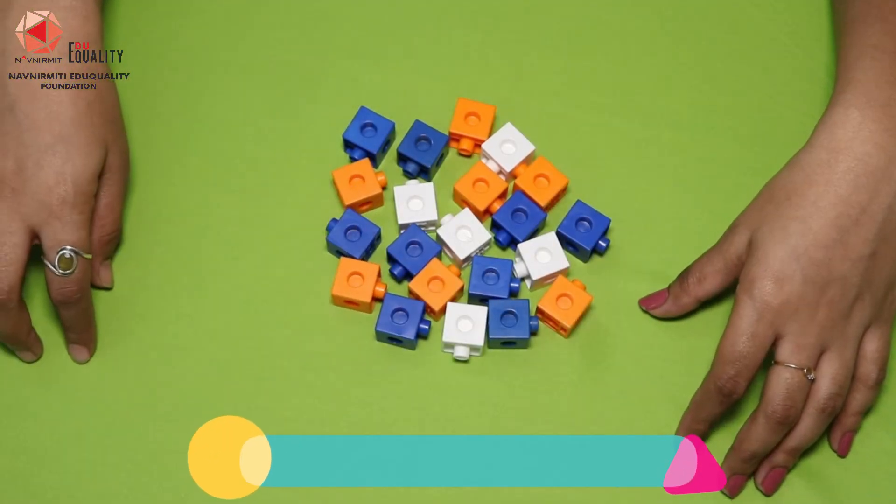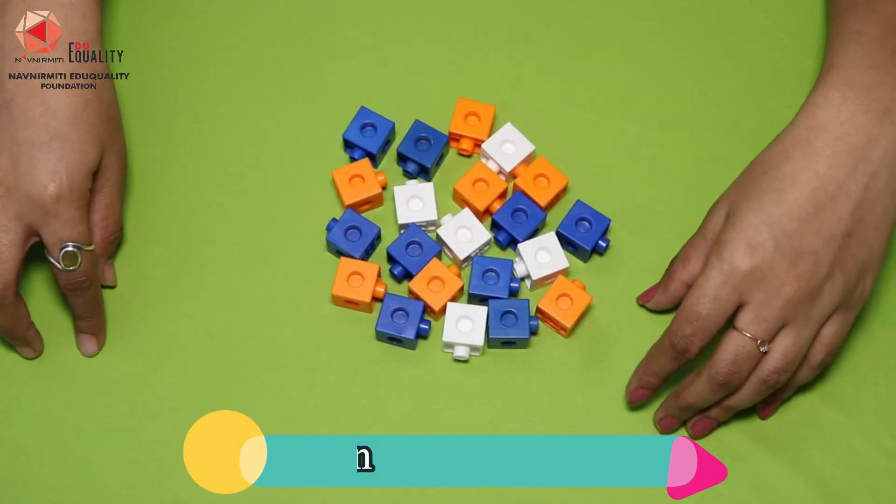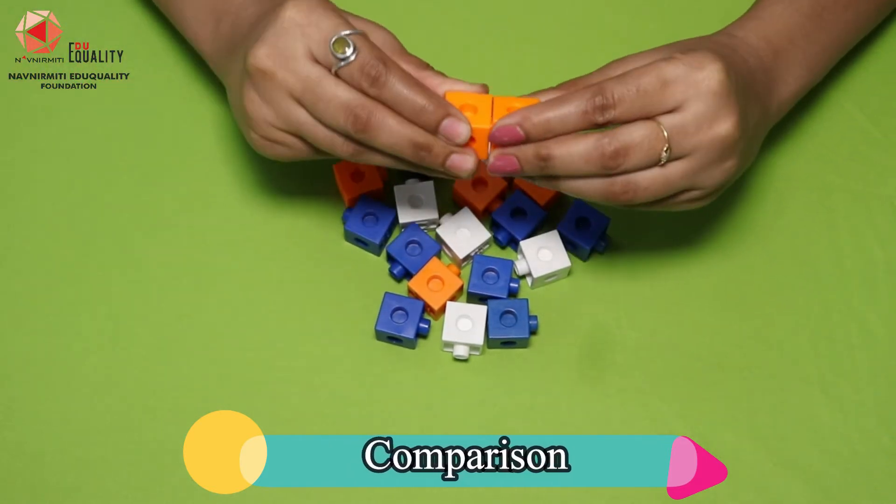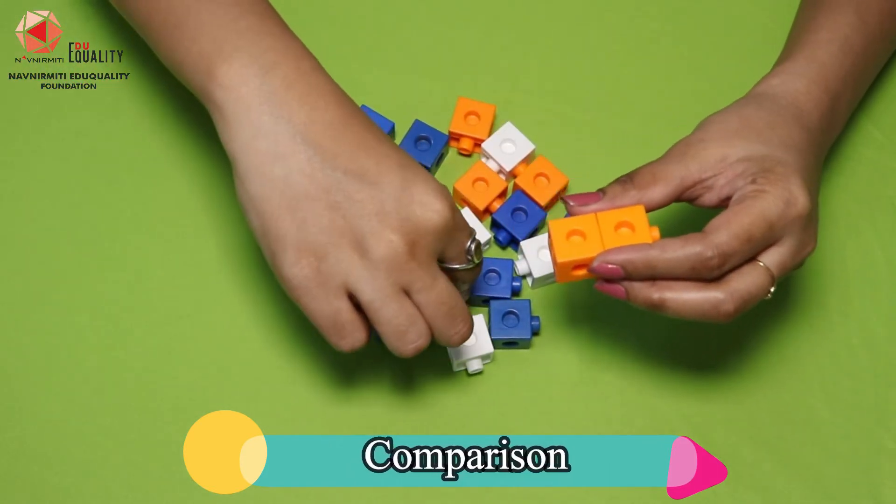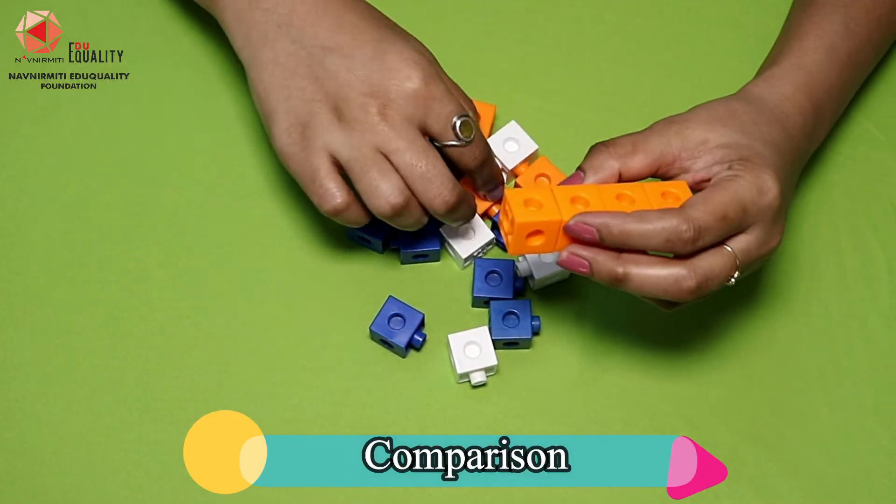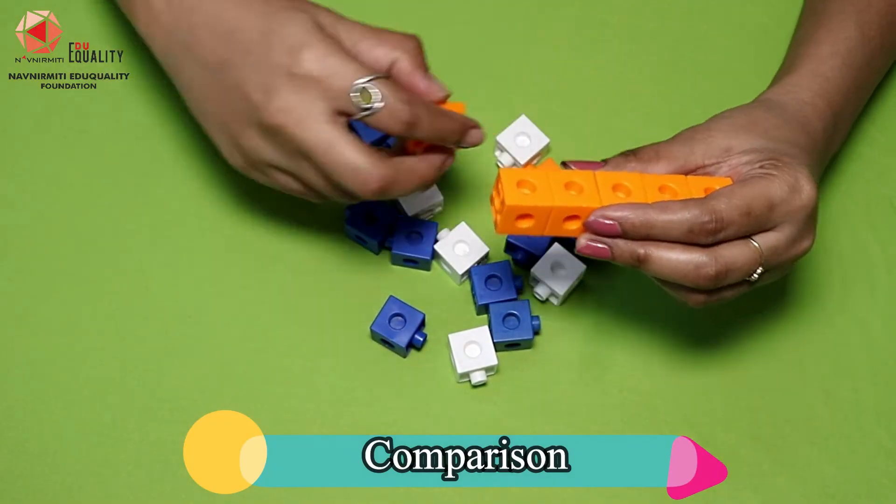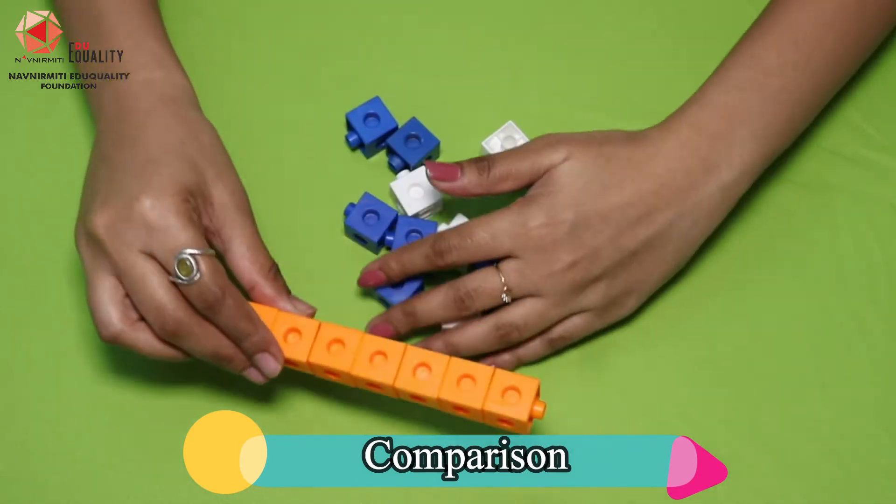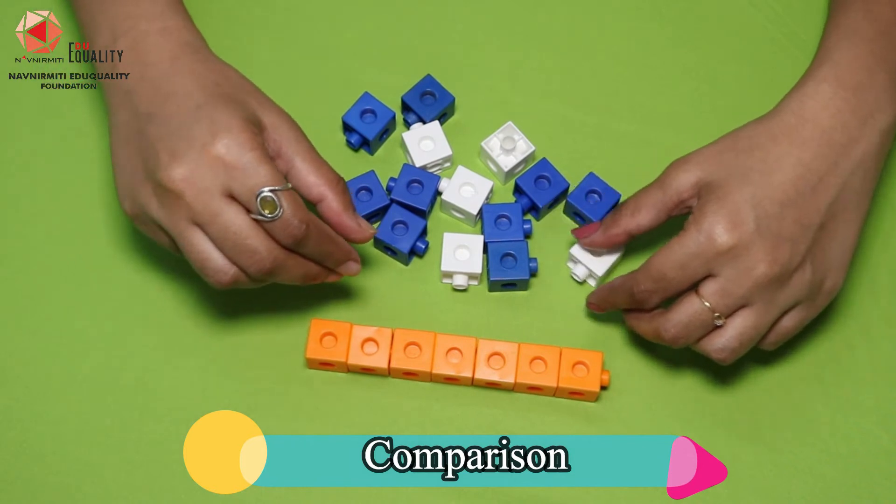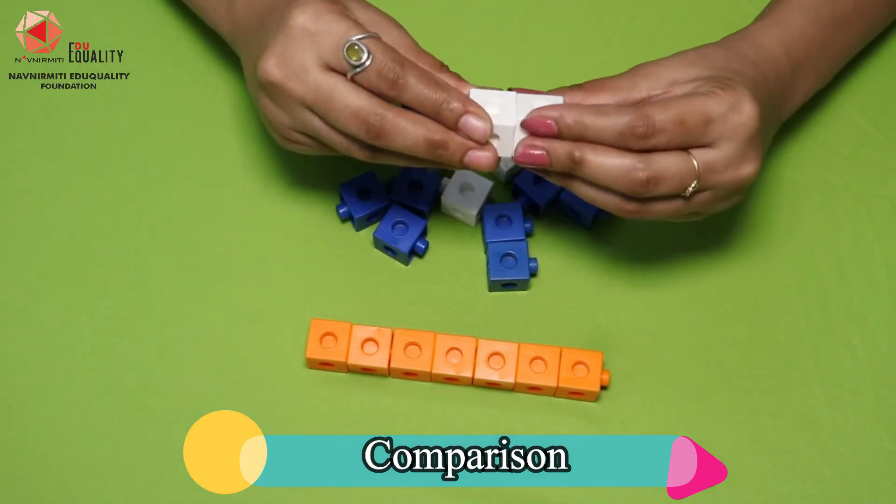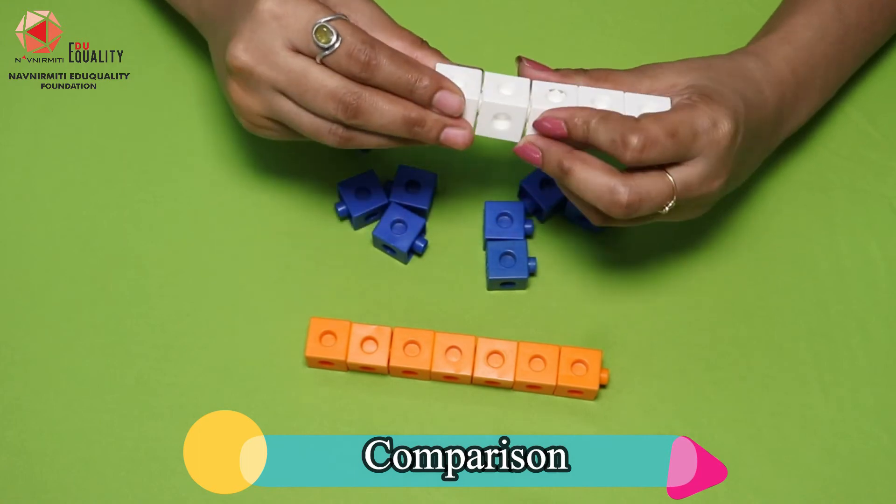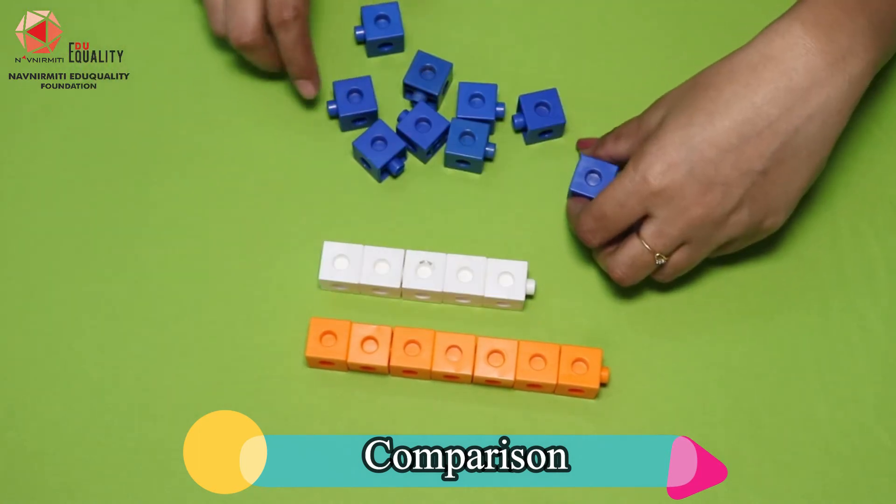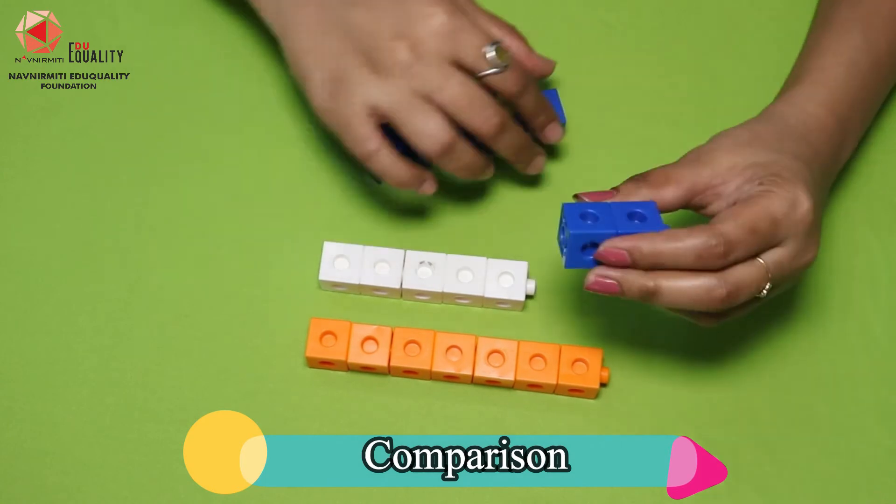Let's separate all three colored blocks. Let's start by separating the orange blocks. Now let's separate the white blocks. Now let's separate the blue blocks.